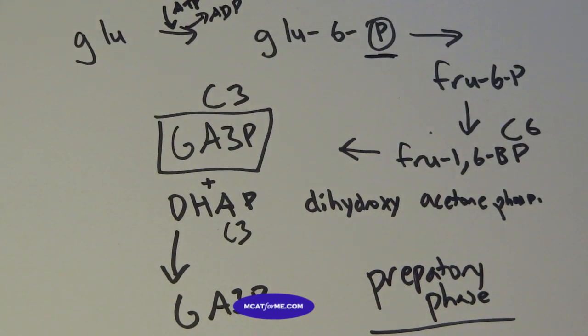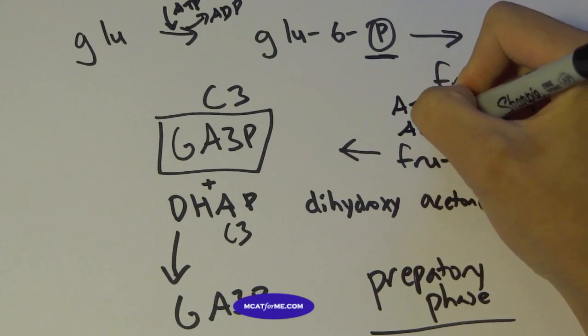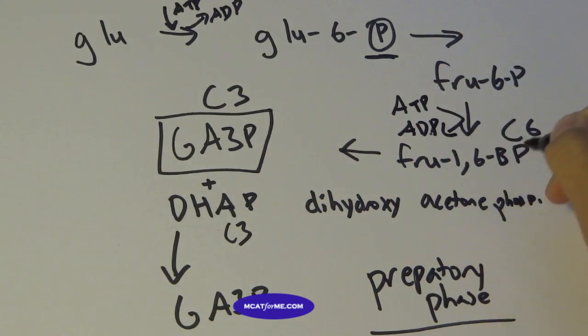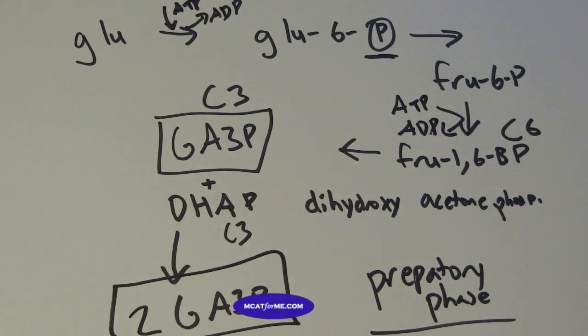And again, you can tell that there's got to be another ATP hydrolysis right here because we have a bisphosphate, meaning 2. And fructose 6-phosphate, which just has 1. So we have to add a phosphate group right there. So now we have at the end product, we have 2 GA3Ps, glyceraldehyde 3-phosphate.